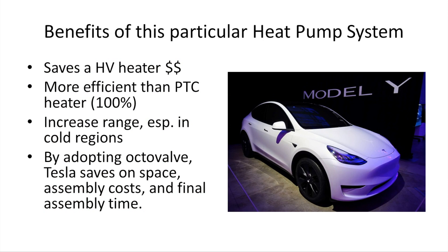To summarize: by using this heat pump, it can replace a high-voltage heater. Prior Tesla models like the Model S, Model 3, and Model X use a high-voltage PTC heater, which is quick but less efficient than a heat pump. Using heat pump techniques, the efficiency for heating can be as high as 300 to 500 percent, which can increase the range of the vehicle in cold ambient conditions, greatly reducing range anxiety for customers in cold regions. Also, by adopting the octa valve, Tesla saves on space, assembly costs, and final assembly time.